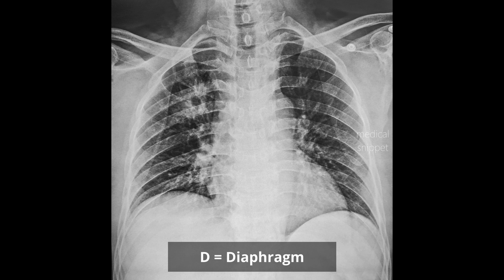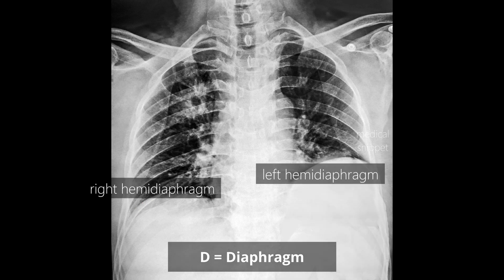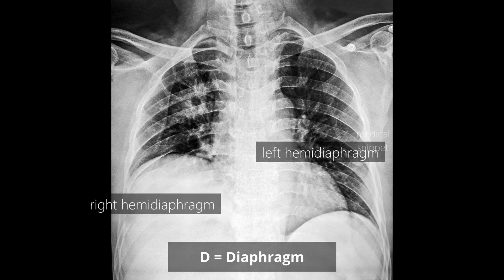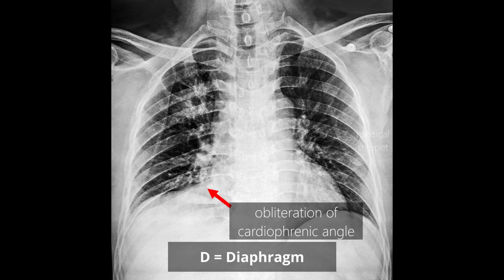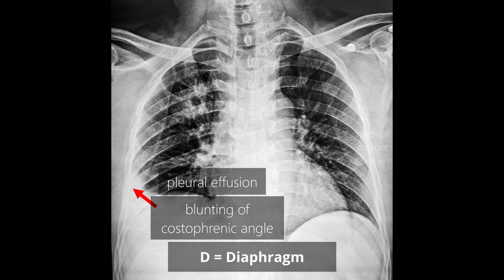Next is D. D stands for diaphragm. We have to trace the diaphragm from cardiophrenic angle to the right side. Normally the left hemidiaphragm is slightly lower than the right side. If this configuration is reversed — that is, the right hemidiaphragm is lower than the left — left diaphragmatic palsy is to be suspected. If the right hemidiaphragm is greatly elevated, right diaphragmatic palsy is to be suspected. If there is obliteration of the cardiophrenic angle, one should suspect lower lobe consolidation, collapse, pericardial cyst, or loculated pleural effusion. If the costophrenic angle is blunted, it is the classic sign of pleural effusion.